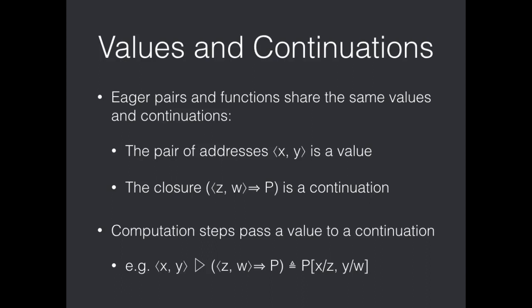So, now we'll look a bit at the details of how the language works, some of the technicalities. So, we work throughout with values and continuations. As we saw earlier on, we have this pair of addresses, x, y, that we wrote into memory with pairs with conjunction. And in the case of implication, we wrote this closure or continuation, brackets z comma w goes to p into memory. So, memory can contain either values or continuations.